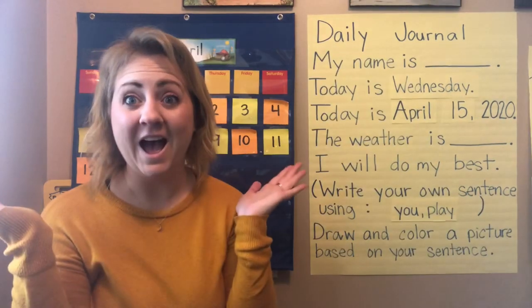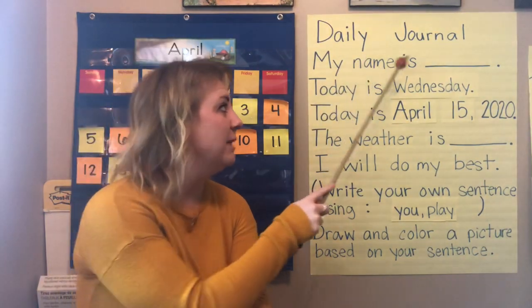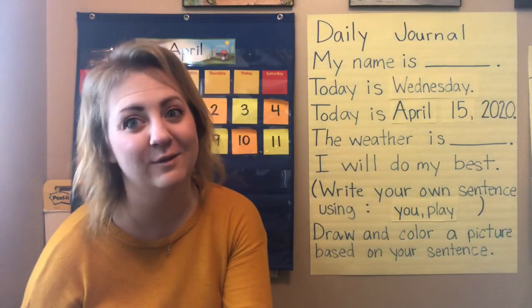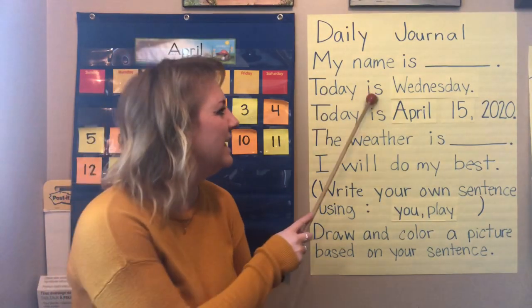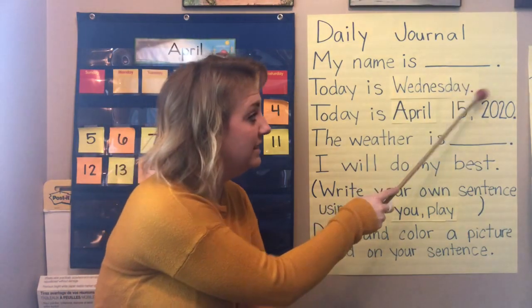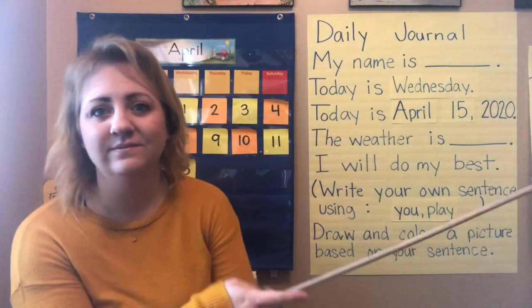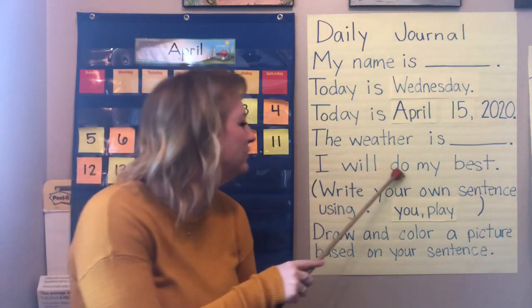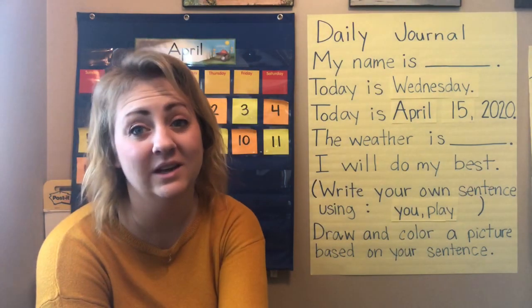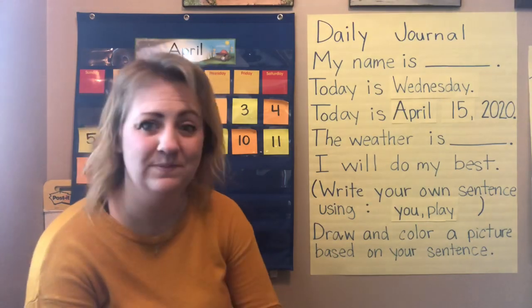We're going to go ahead and write our daily journal. Let's start with our first sentence. 'My name is...' — you're going to write your name there. If you're really good at writing your first name, which you should be by now, you're going to add your last name also. Today is Wednesday. Don't forget to put those periods at the ends of our sentences. Today is April 15, 2020. The weather is... I want you to write in your weather here. You are all doing a really nice job trying your hardest and doing your best, and it's really showing in the work that I'm getting. Awesome.